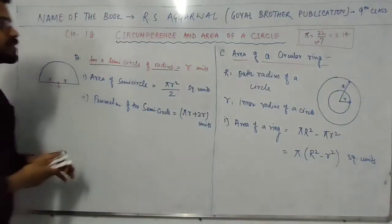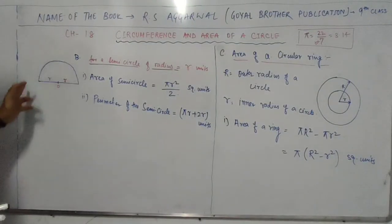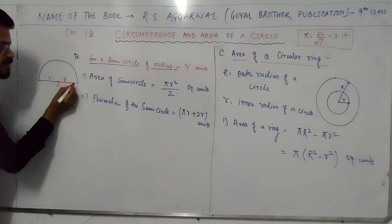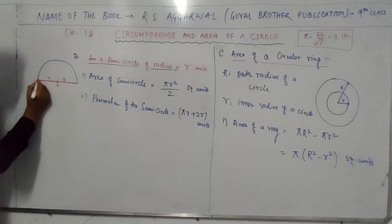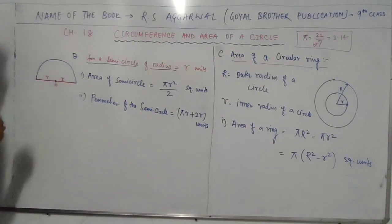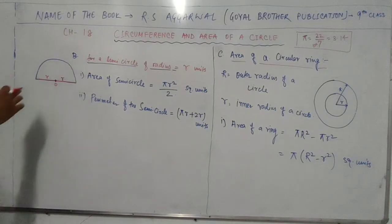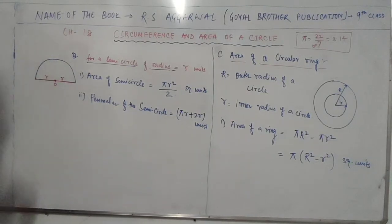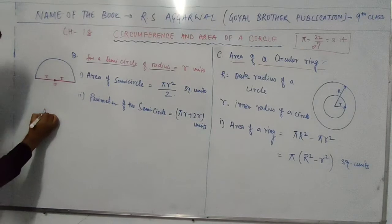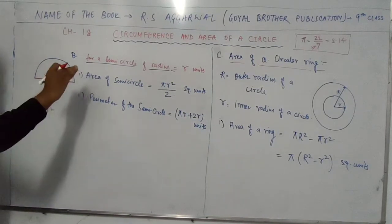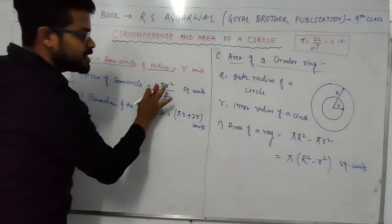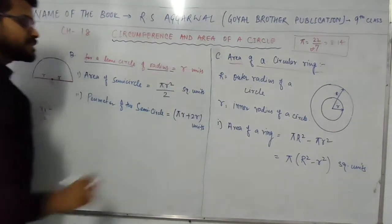Now the next topic is semi-circle. A semi-circle is basically half of a circle. The radius of a semi-circle is always measured from the center point of the circle to the outer part. Area of a semi-circle is πr² by 2, because the area of a full circle is πr² and a semi-circle is half of the circle, so the area is also half. The unit is square units.